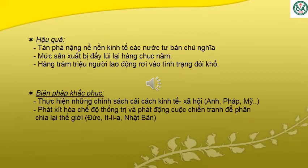Cuộc khủng hoảng kinh tế thế giới đã để lại những hậu quả như thế nào? Phần hậu quả: tàn phá nặng nề nền kinh tế các nước tư bản chủ nghĩa, mức sản xuất bị đẩy lùi lại hàng chục năm, hàng trăm triệu người lao động rơi vào tình trạng đói khổ. Biện pháp khắc phục: thực hiện những chính sách cải cách kinh tế xã hội như Anh, Pháp, Mỹ; nhưng cũng có một số nước khác chọn biện pháp phát xít hóa chế độ thống trị và phát động chiến tranh để phân chia lại thế giới như Đức, Italia và Nhật Bản.